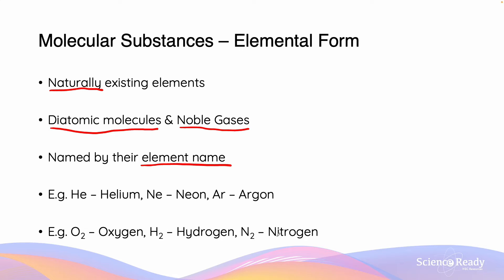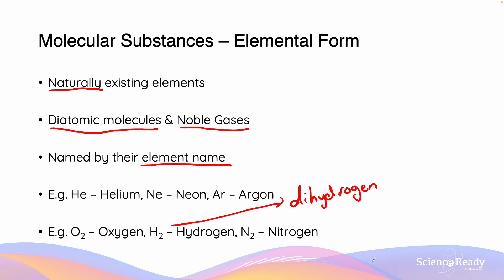It is important to note, however, that the official names for diatomic substances may be different. So for example, H2's official name is actually dihydrogen. But the reason why they are generally known simply as the elemental names is because these diatomic forms are their most abundant allotropes.